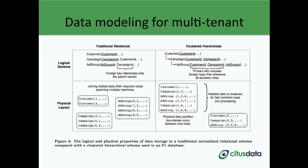The F1 paper also highlights how to best model data to support many tenant customers in a distributed database. In the relational database model on the left, you have customer, campaign, and ad group tables, each distributed on their own primary key — customer on customer ID, campaign on campaign ID, and ad group on ad group ID. The challenge is that if you're running transactions across these entities or joining these datasets, all operations go over the network and must be performed consistently.